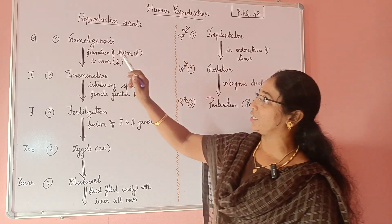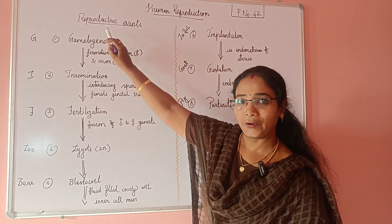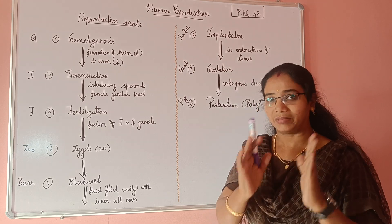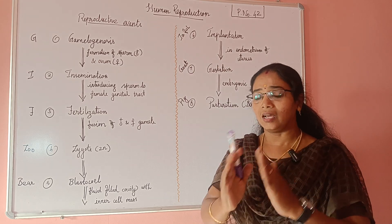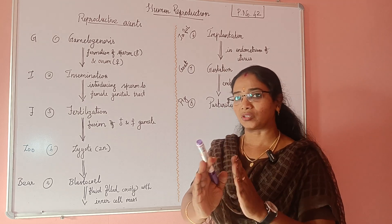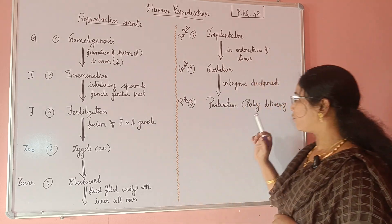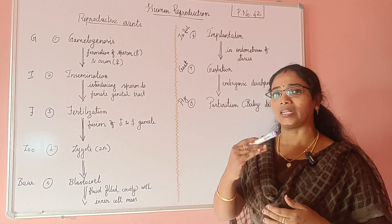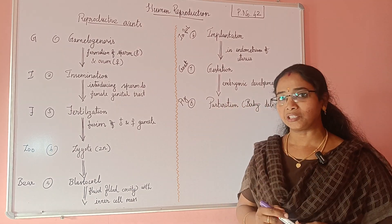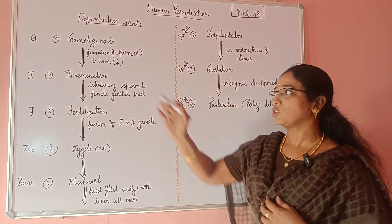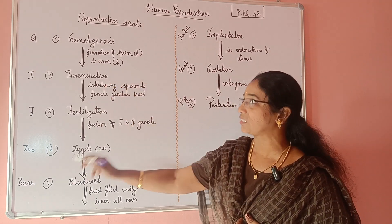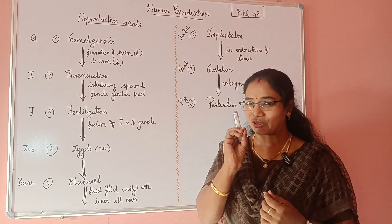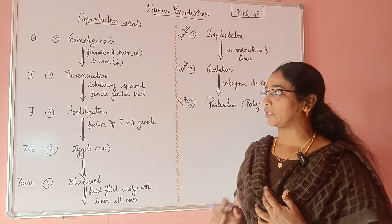The question is about Reproductive Events — how does a new organism develop? This is the first process and the final process. This is the first step, and we will discuss it. How do you think? It's very simple. That's what I told you. This is a small trick.